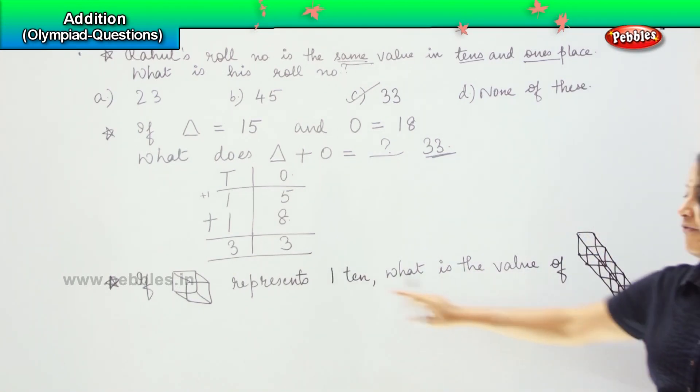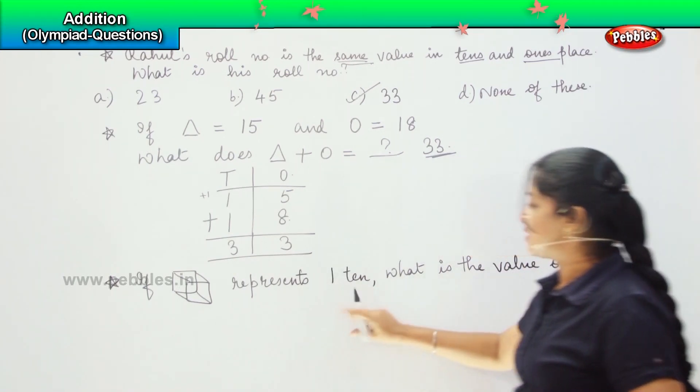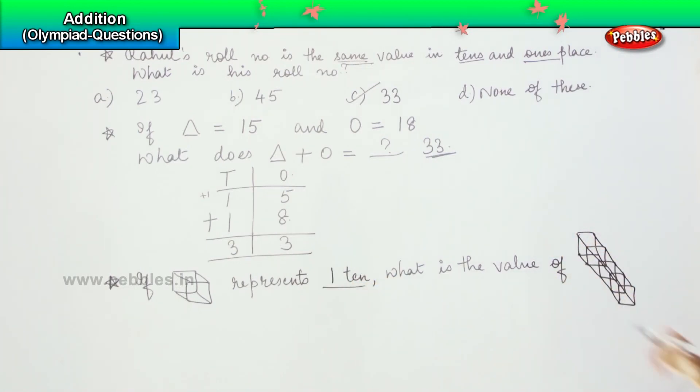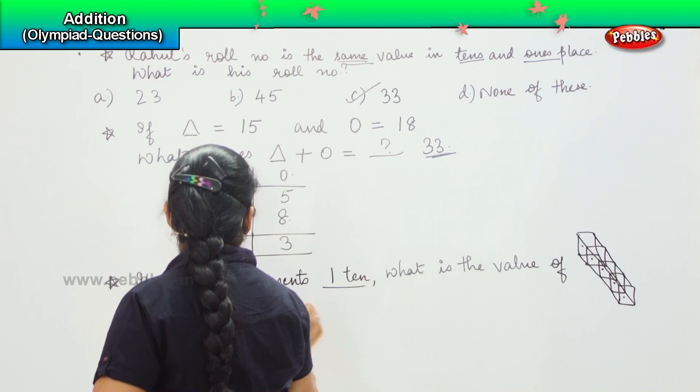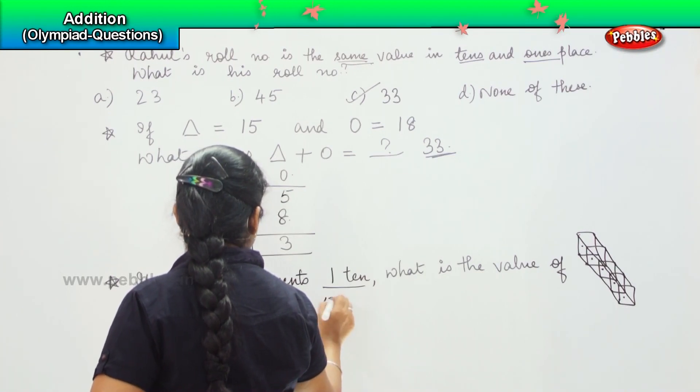How many cubes are there? Just count: 1, 2, 3, 4, and 5. Which means my answer is 5 tens, or 50.